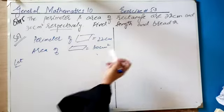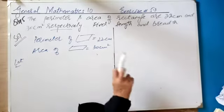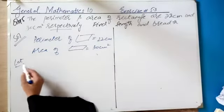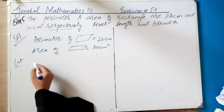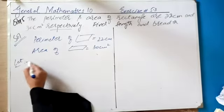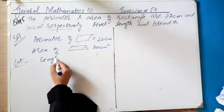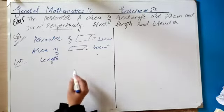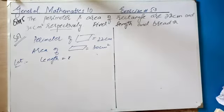Because we have to find length and breadth — both things we want to find. We do not know them, so we write length. Let's write x — let length = x.